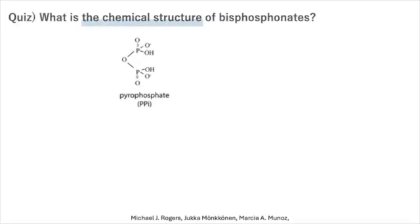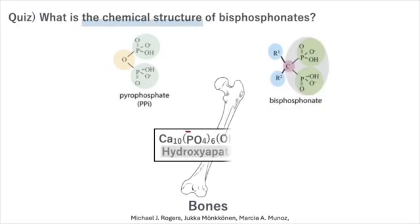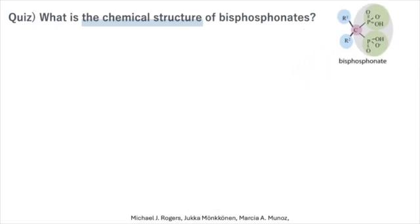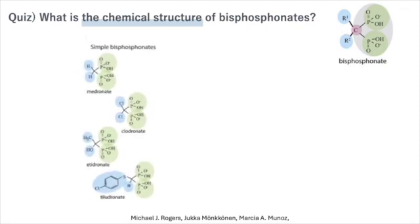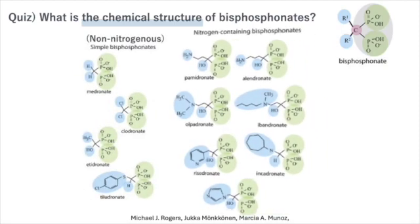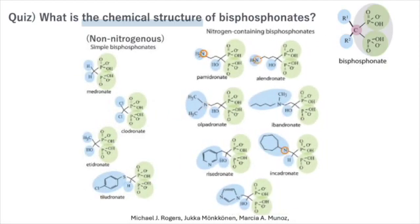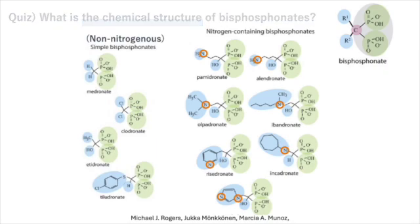What is the chemical structure of bisphosphonates? Bisphosphonates are considered analogs of pyrophosphate, allowing them to bind to bone mineral. There are two classes of bisphosphonate compounds: non-nitrogenous and nitrogenous. These two types of bisphosphonates inhibit osteoclasts in different ways.